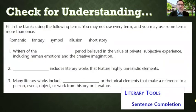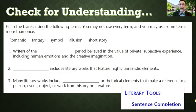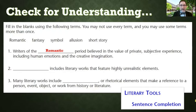Now let's look at the checking for understanding questions. We have some fill-ins with words like Romantic, fantasy, symbol, and allusion. Number one says: writers of the blank period believed in the value of private subjective experiences including human emotions and the creative imagination — and that period of time was called the Romantic period. It was the idea that there's more to the world than just the physical, that there might be some spiritual energies that connect ideas — think of Star Wars and the Force. That kind of idea comes out of this Romantic period.